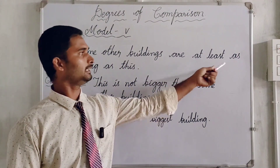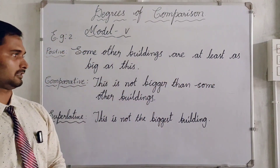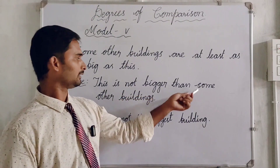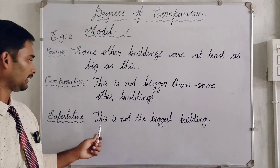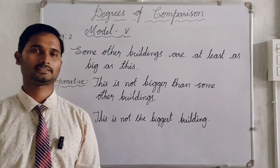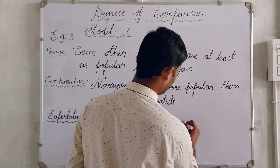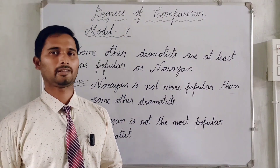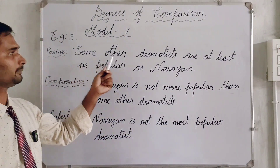Here is an example: Some other buildings are at least as big as this. Comparative form: This is not bigger than some other buildings. Superlative: This is not the biggest building. Let us learn some more examples of model five.